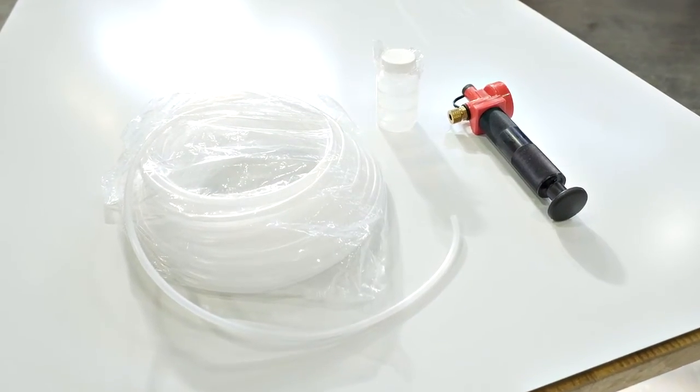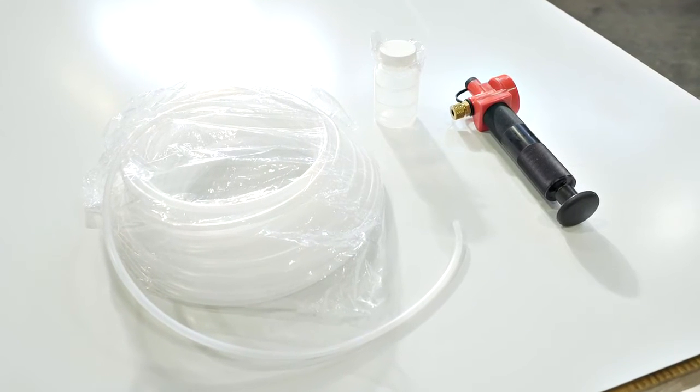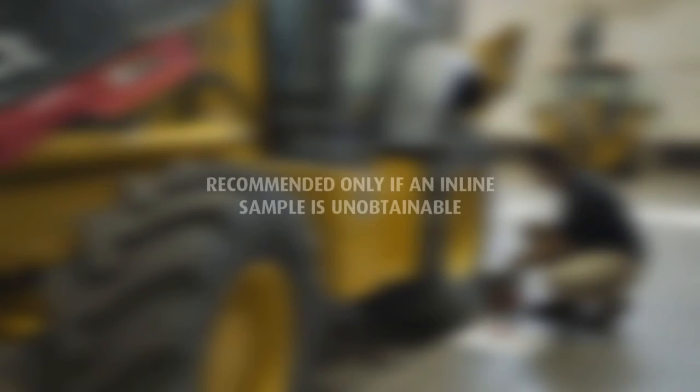Another method is pulling a sample from a reservoir or sump using the vacuum pump with tubing. Obtaining a sample from the reservoir is recommended only if an inline sample is unobtainable. The fluid to be sampled should be warm and circulated for 30 minutes in order to obtain a representative sample. Fluid and equipment that has not been operating and is cold allows information such as wear metals and contaminants to settle out in the reservoir.